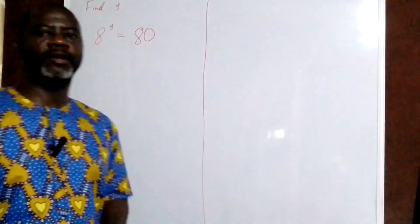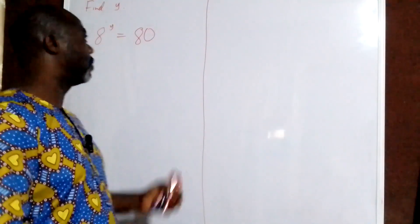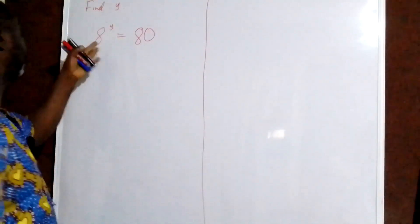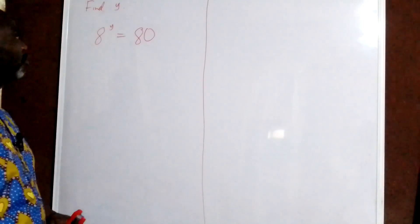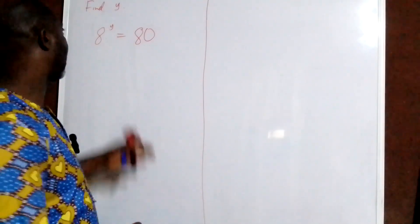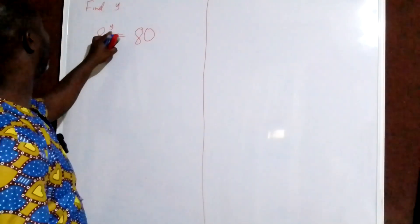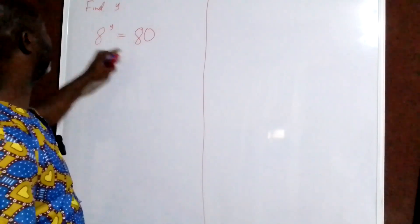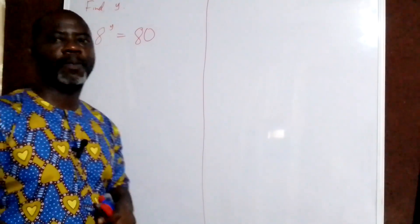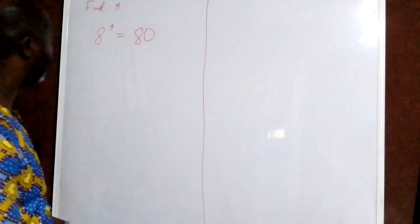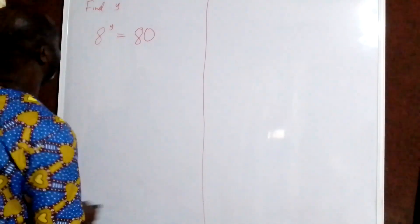Hello guys, welcome back to my YouTube channel once again. Today we have this beautiful exponential equation to solve. We have 8 to the power of y equal to 18. We have to find y. So how do we tackle this problem?